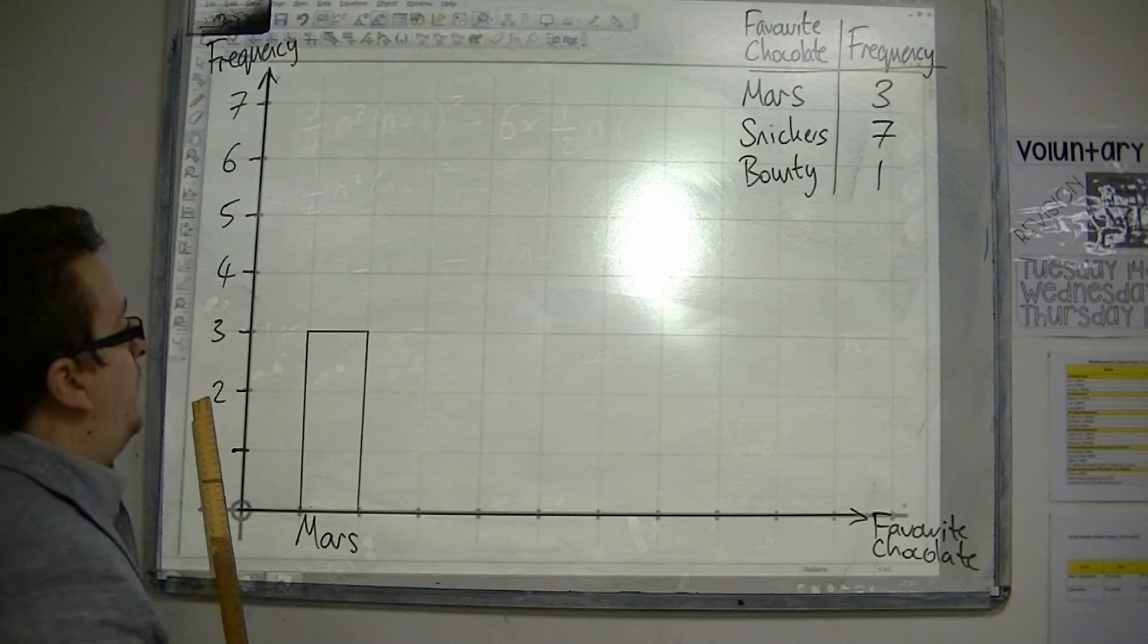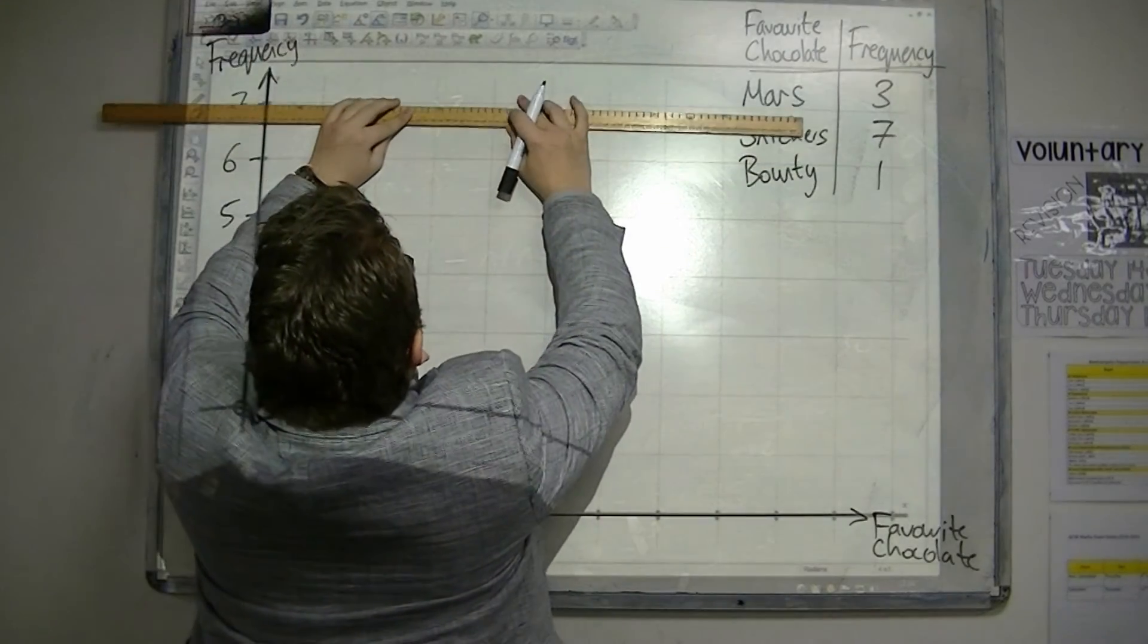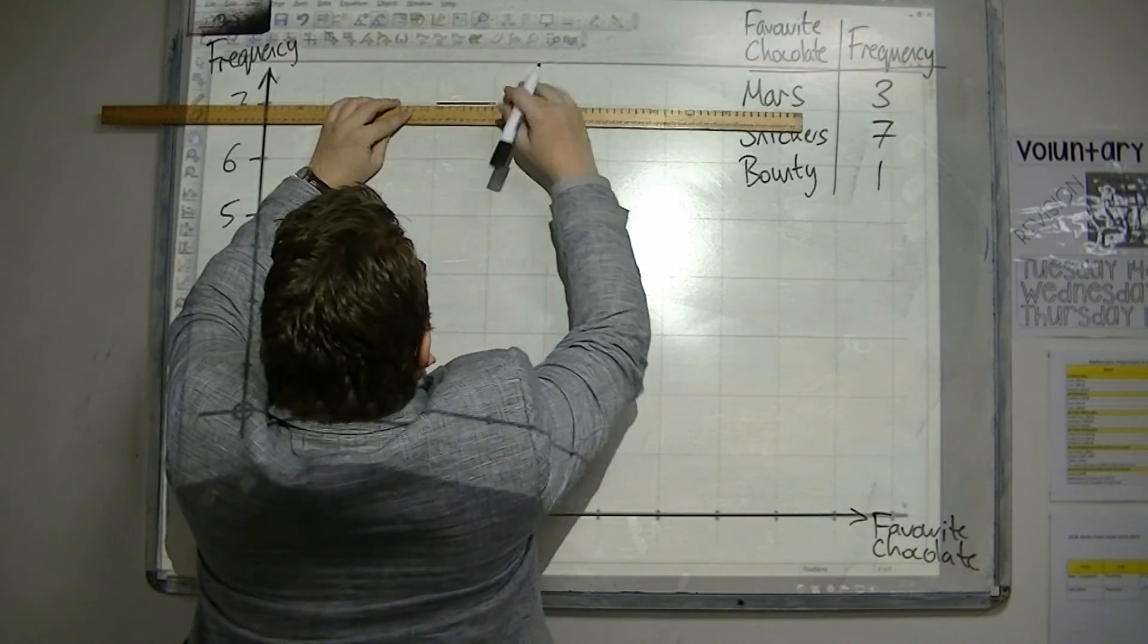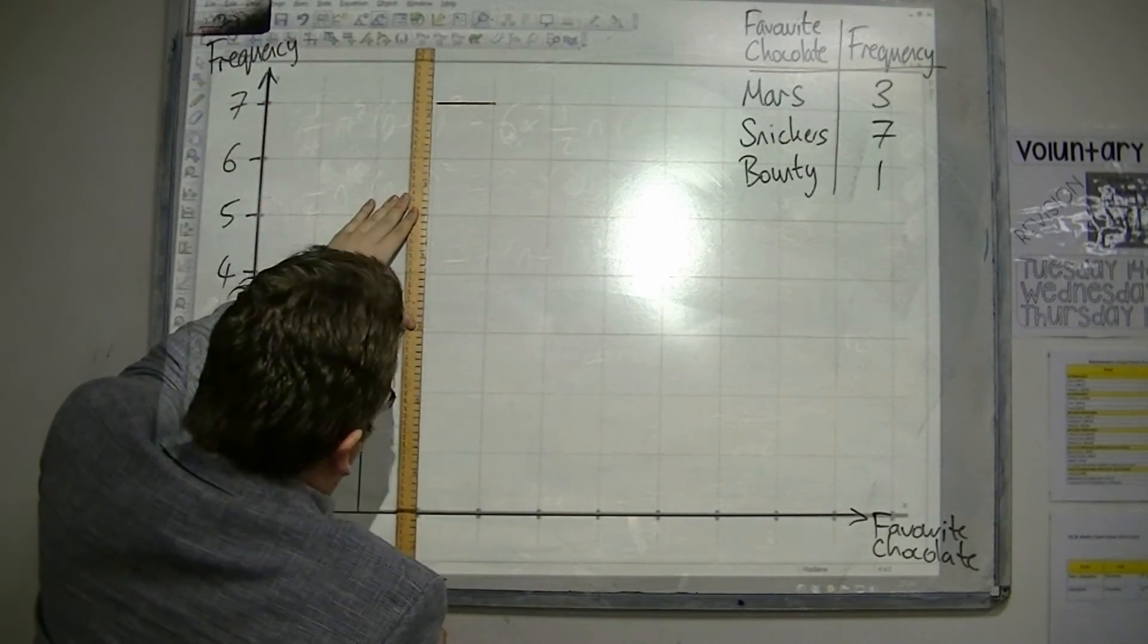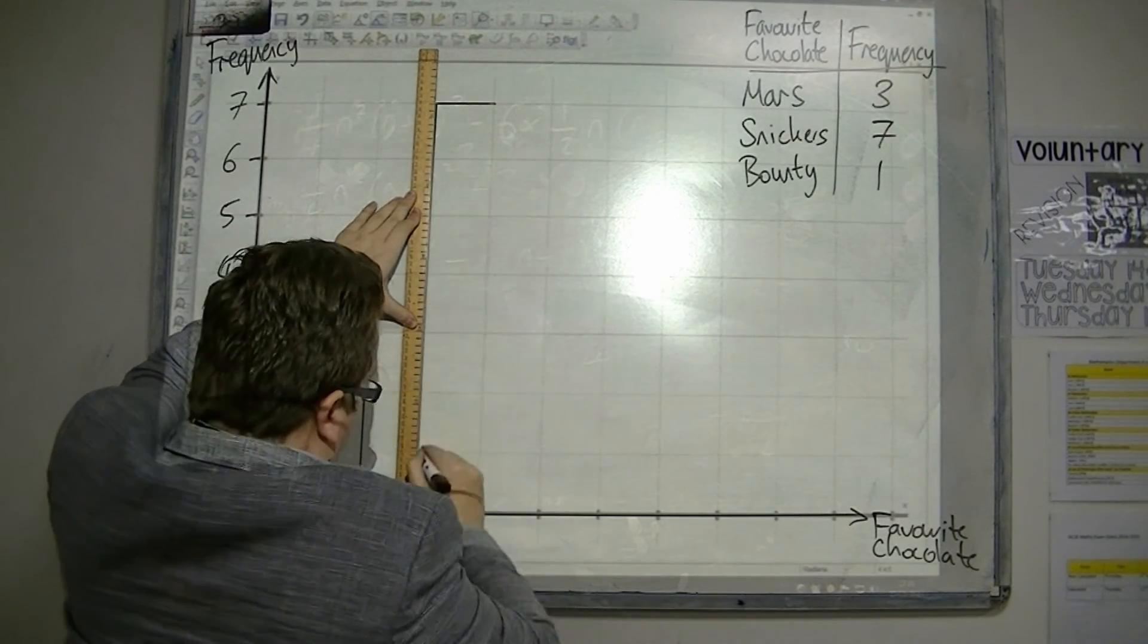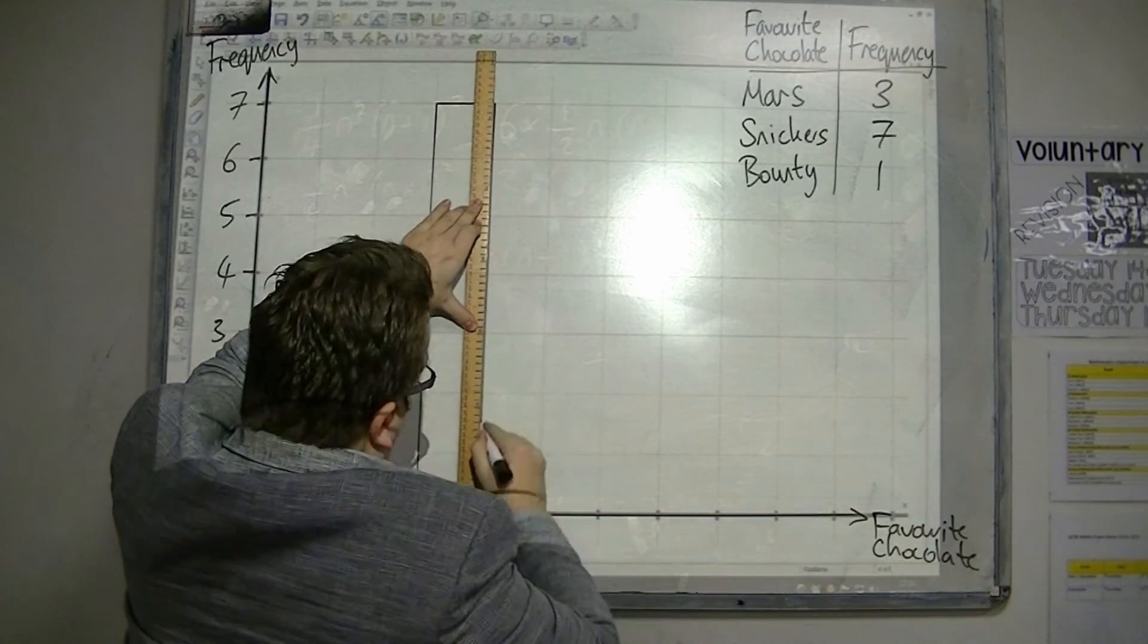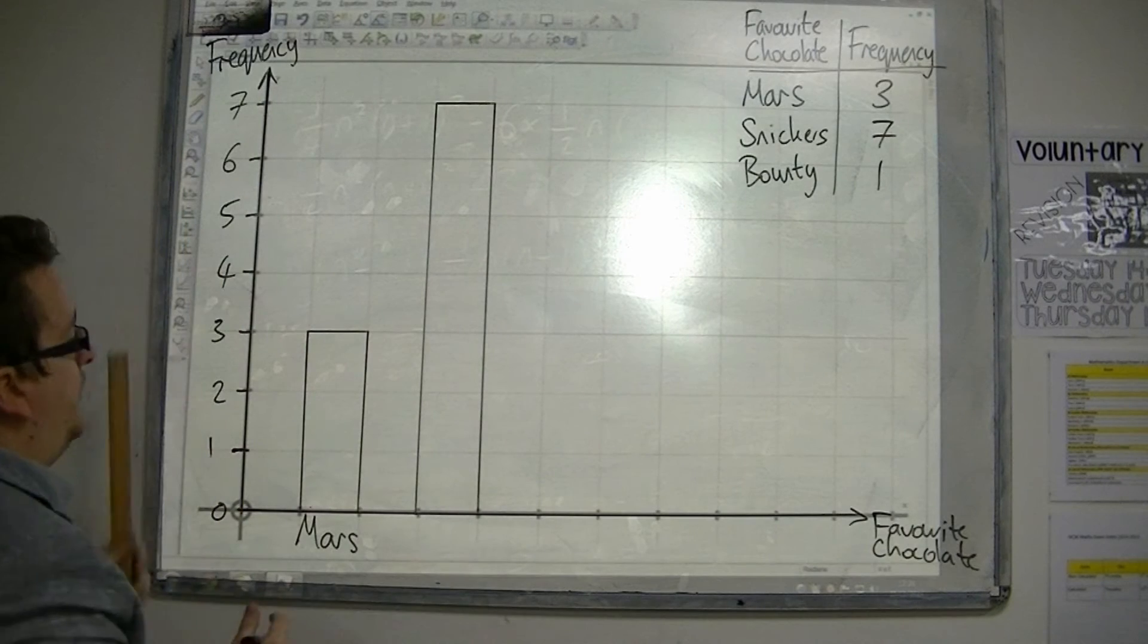Then, I am going to have Snickers. I am going to leave a gap. So, I am now going up to seven. Notice how I am using a ruler. Make sure you do that. Don't do this freehand. Otherwise, you will lose marks. So, that is Snickers.